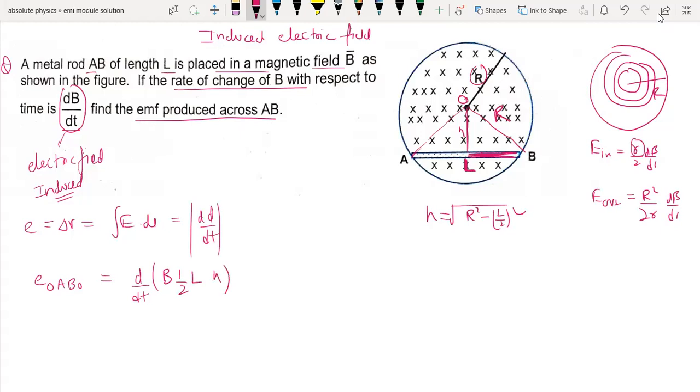Height is H, so the area is half L times H. B is the variable, so we have L times H times dB by dt.